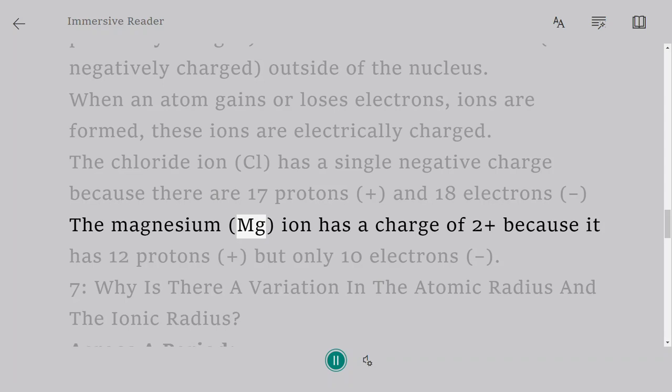The magnesium (Mg) ion has a charge of 2+ because it has 12 protons (+) but only 10 electrons (-).